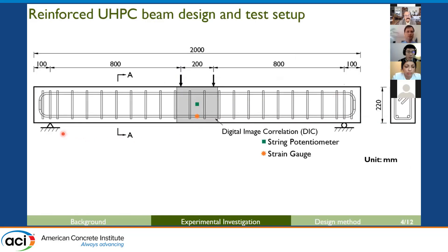Here is the reinforced beam design test setup. These two-meter-long beams are simply supported and subjected to four-point bending. Steel strain is measured using strain gauges installed at mid-span, and mid-span deflection is measured using string potentiometers. Surface strain in the gray region within the constant moment region is monitored using a digital image correlation system.